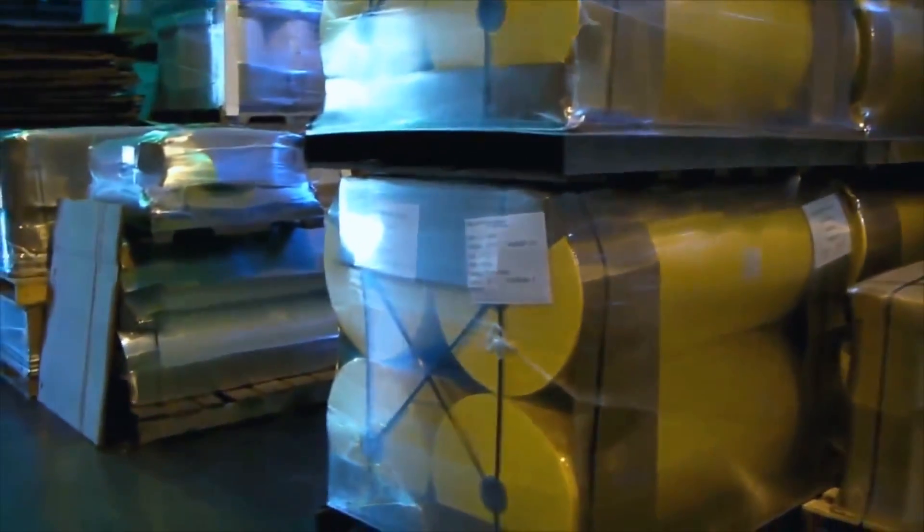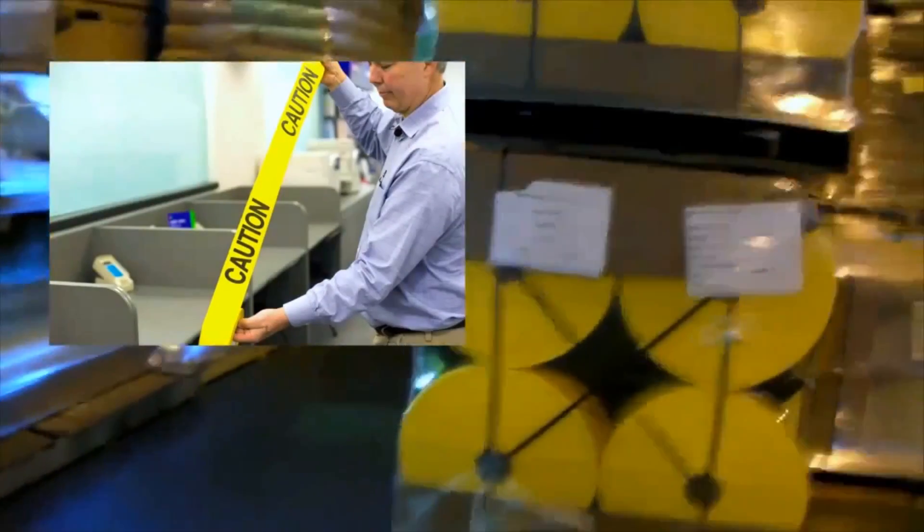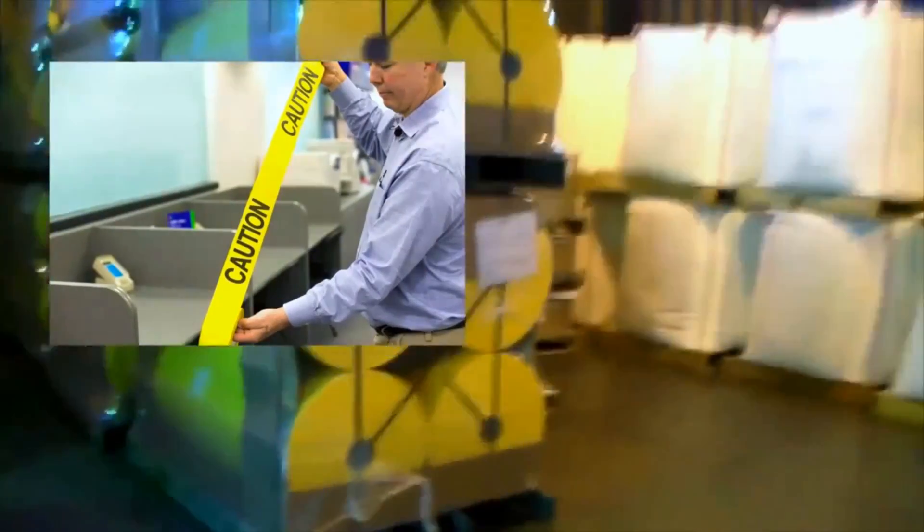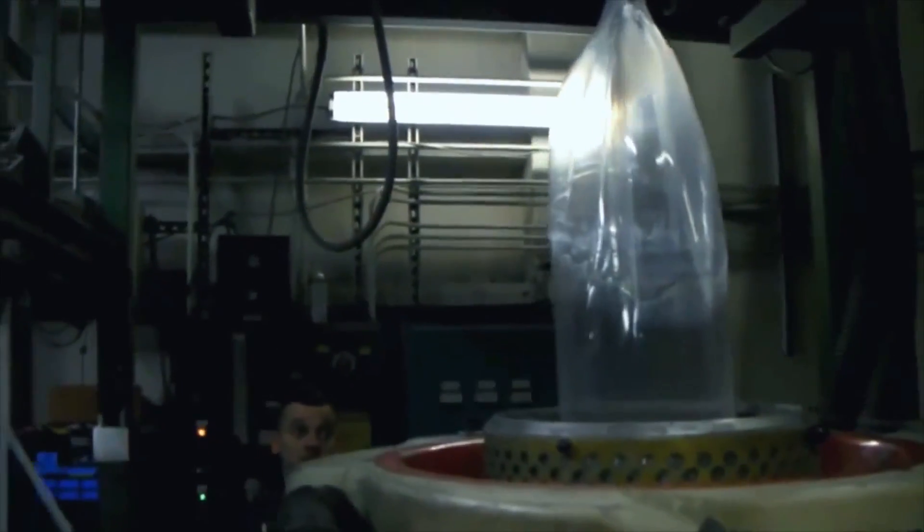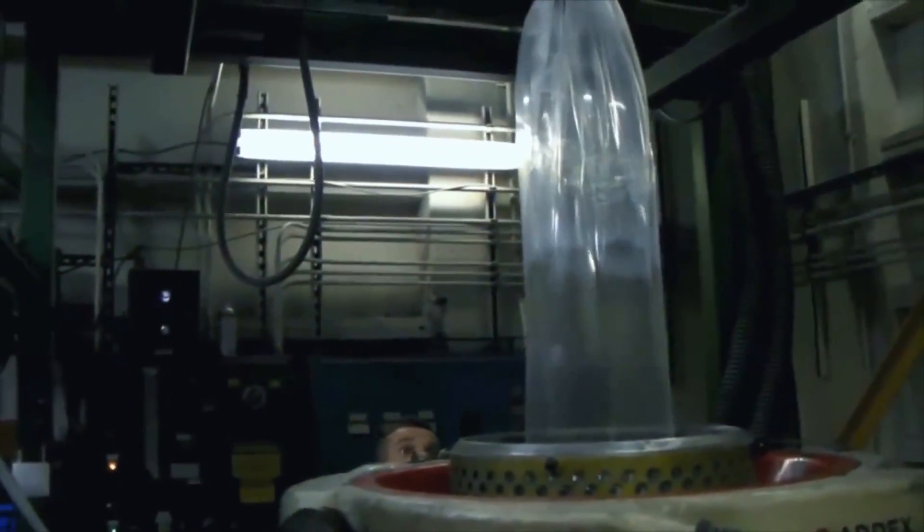The large rolls you see here will be printed and slit into 3 inch wide yellow caution tape. After the order is set up, the process is fairly steady and continuous.